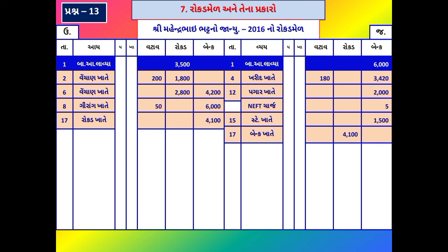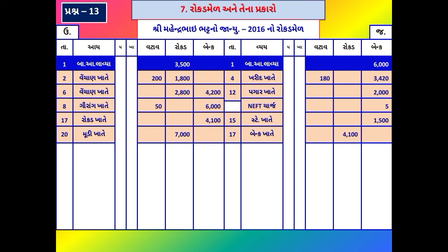તારીખ 20 નો વ્યવાર: ધંધામાં વધુ નાણા લાવ્યા - ફક્ત ધંધાને અસર કરતો વ્યવાર નોંધવાનો છે. ધંધામાં રૂ. 7,000 આવ્યા, તે 'મૂડી ખાતે' નોંધવામાં આવે. વિગતમાં 'મૂડી ખાતે'; ધંધામાં રોકડ આવે, તેથી રોકડ ખાનામાં રૂ. 7,000 નોંધવામાં આવે.